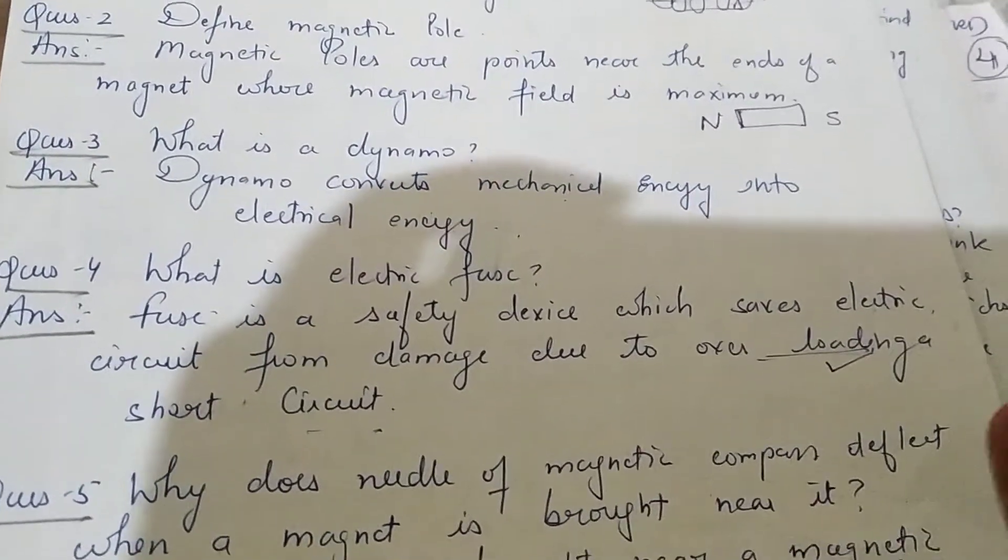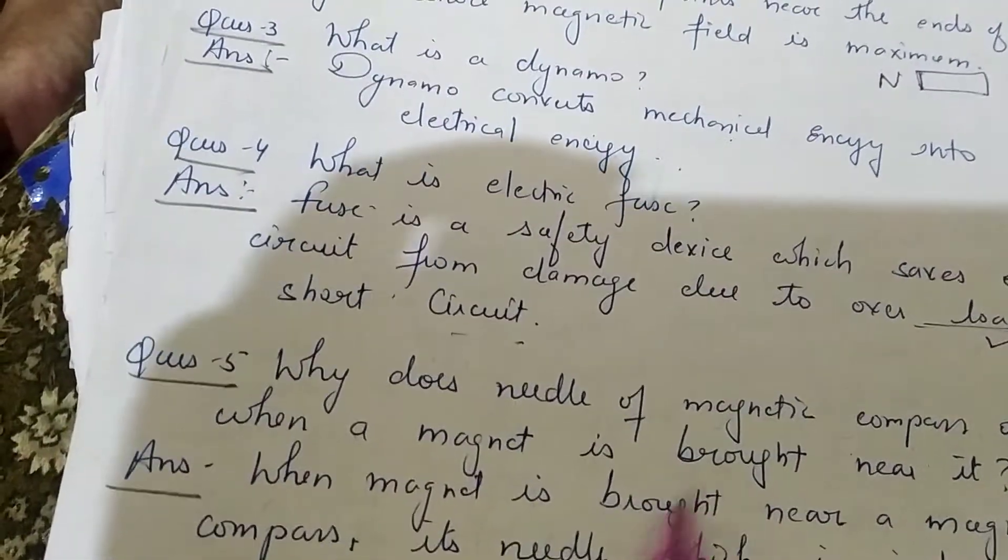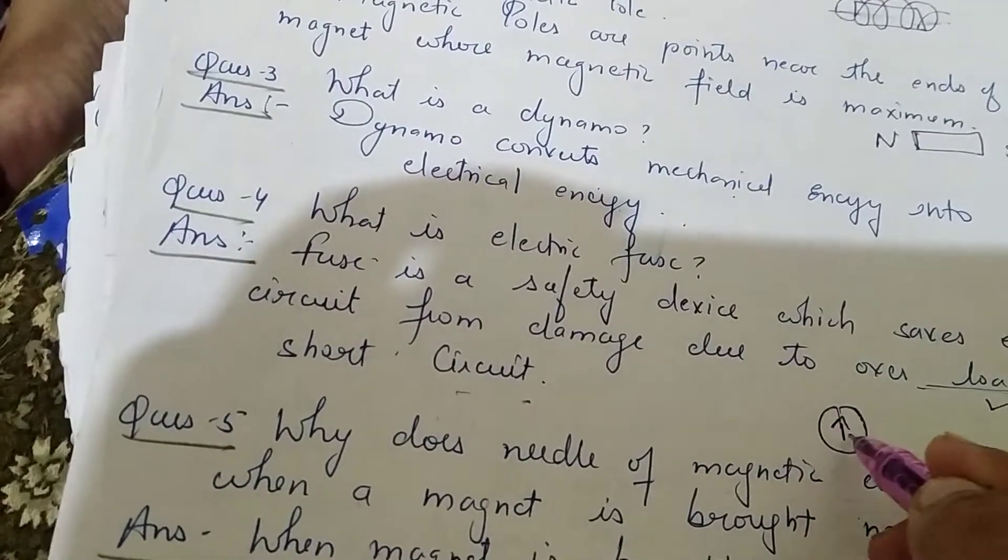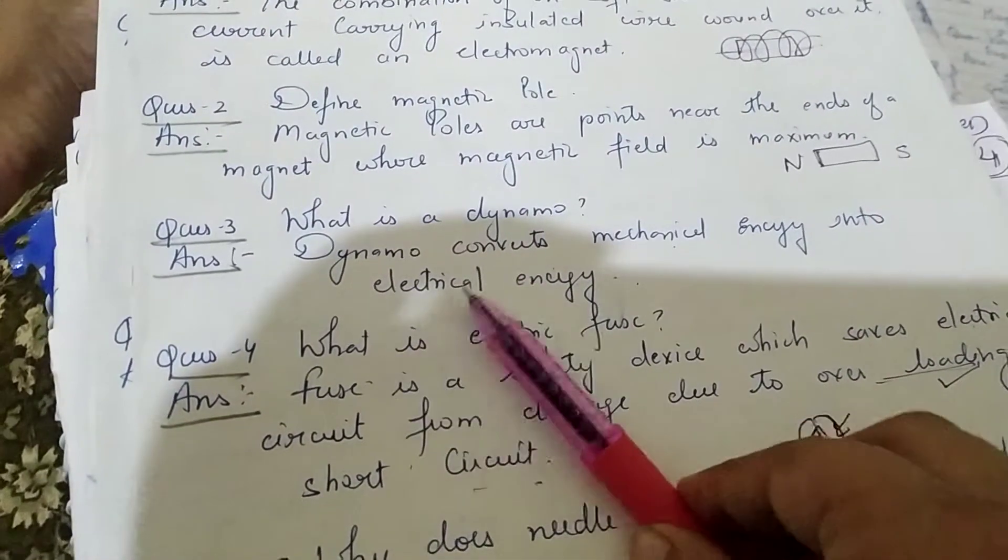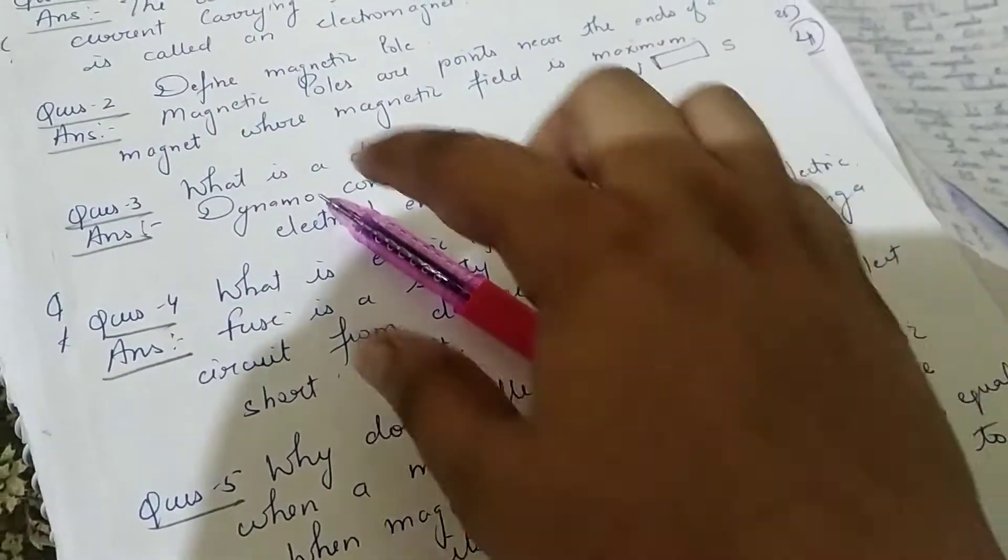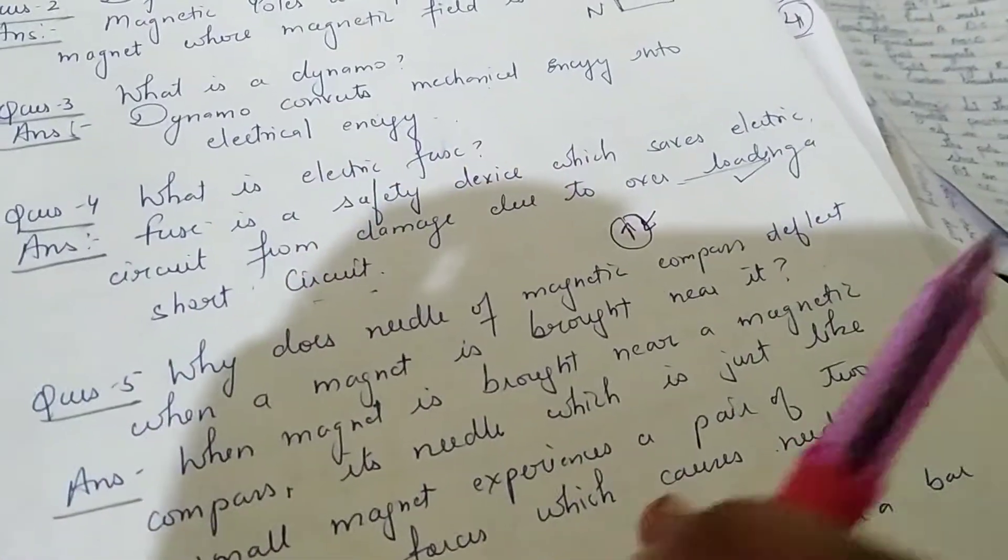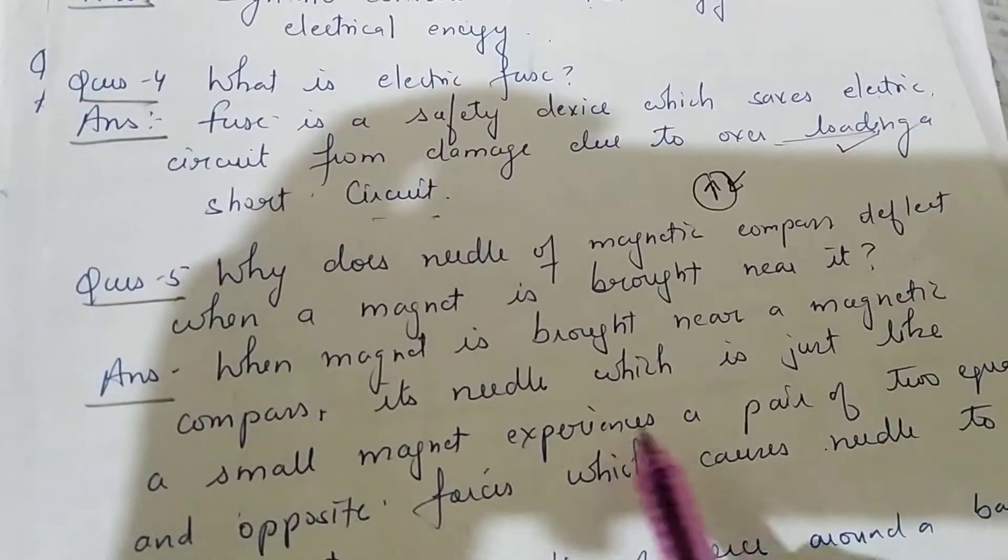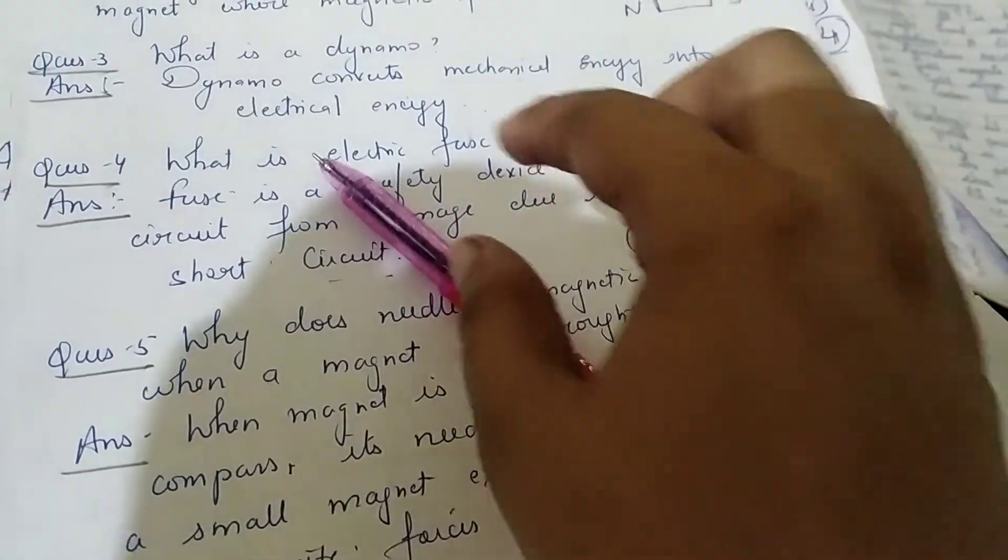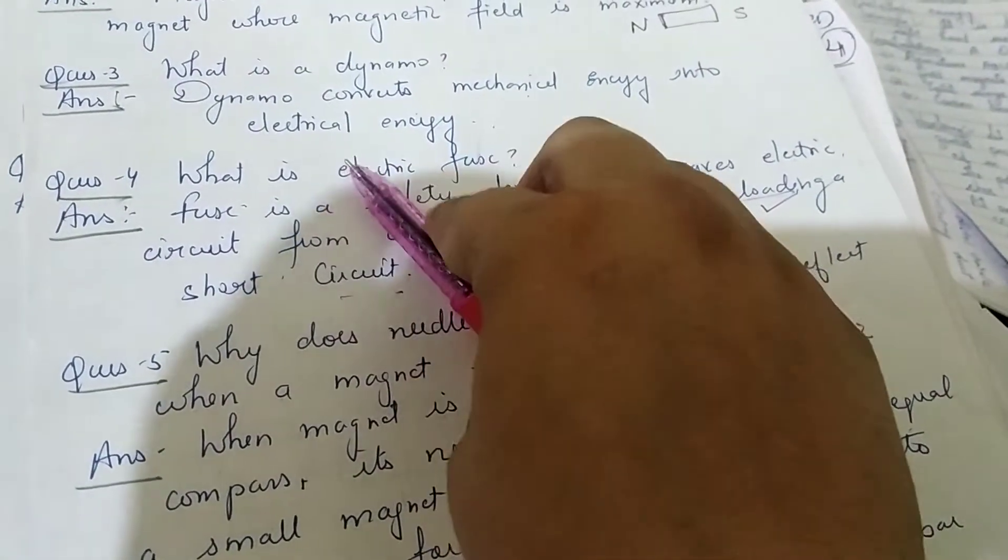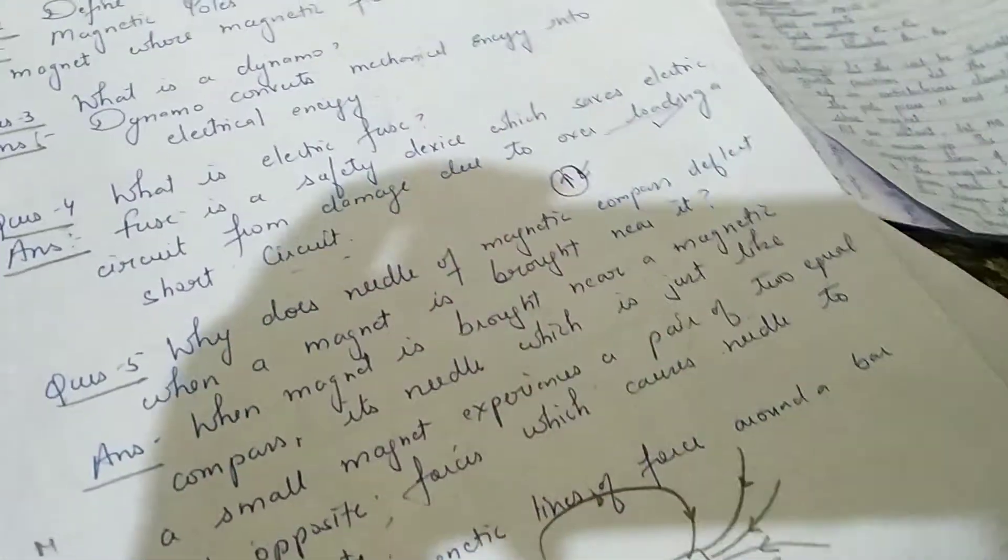Why does the needle of a compass deflect when brought near a magnet? When the compass needle comes near the magnet, north and south poles are deflected by the magnetic needle. Why? Because the small magnet experiences a pair of two equal and opposite forces. So near the magnet, if north is there it will attract south, and if south is there it will definitely move and deflect the magnet.